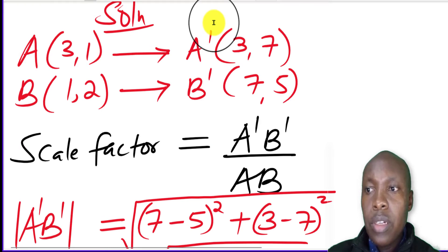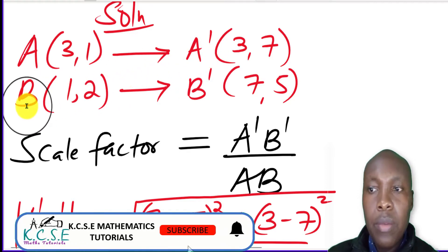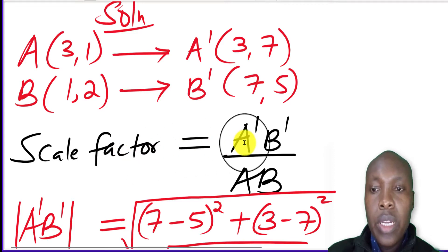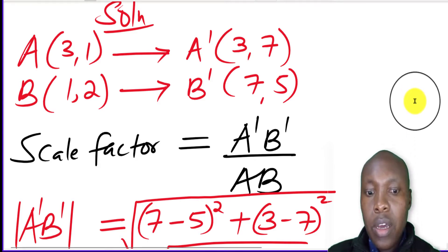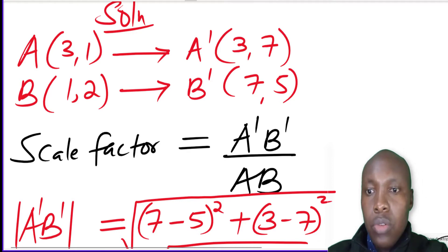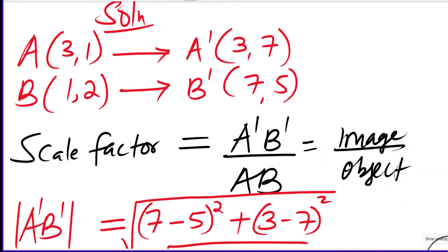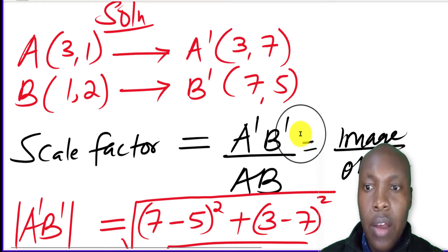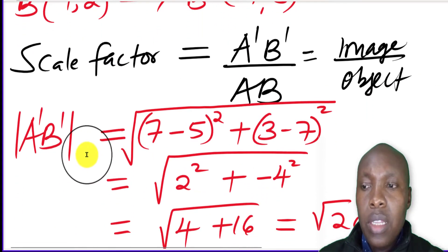We're given that point A(3,1) is mapped onto A'(3,7), so the image of A is A', and the image of B is B', which is (7,5). To get the scale factor of enlargement, we need to get the length of line A'B' — that is the image — then divide by the length AB, which is the object. That ratio gives the scale factor of enlargement.